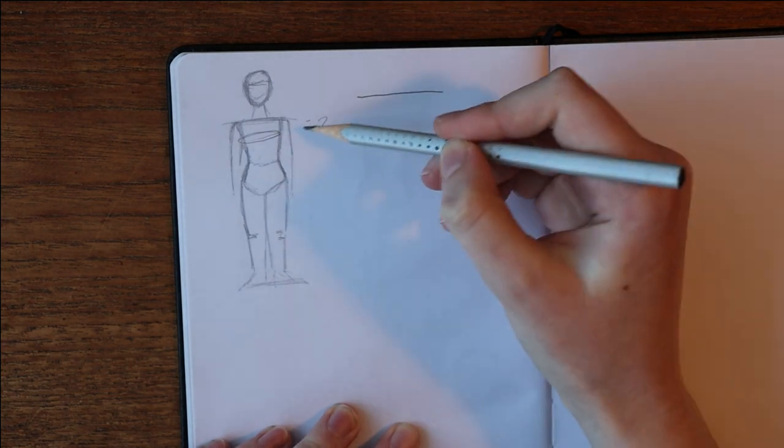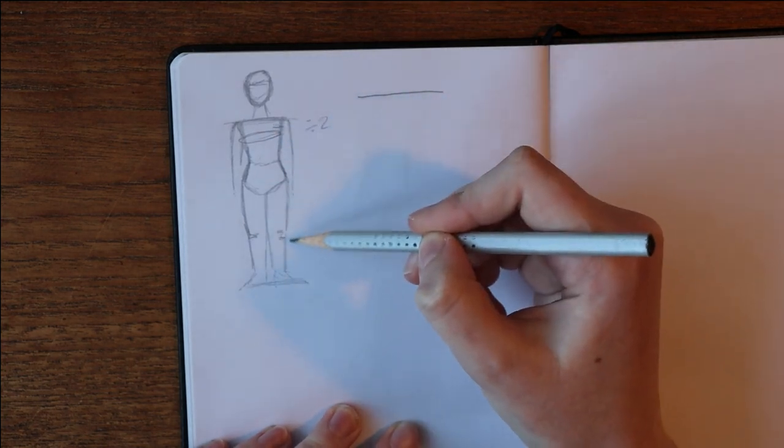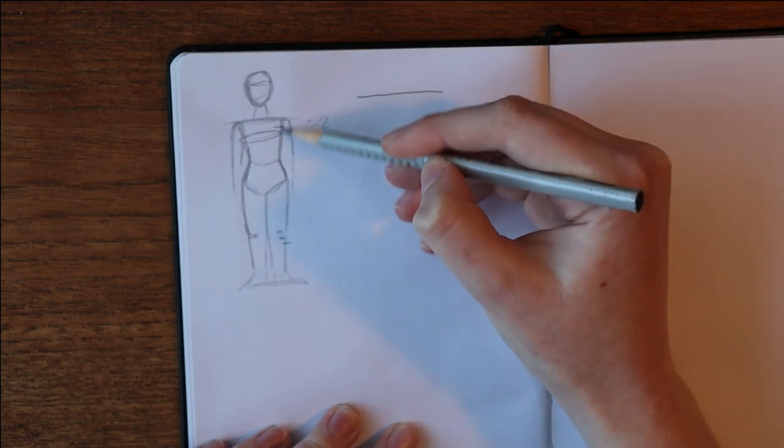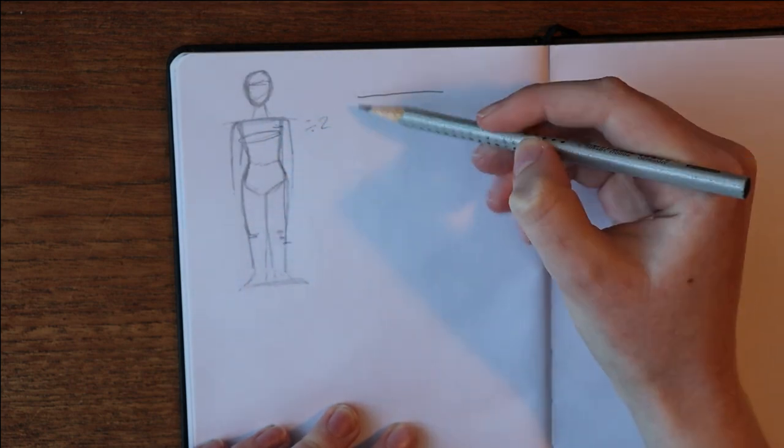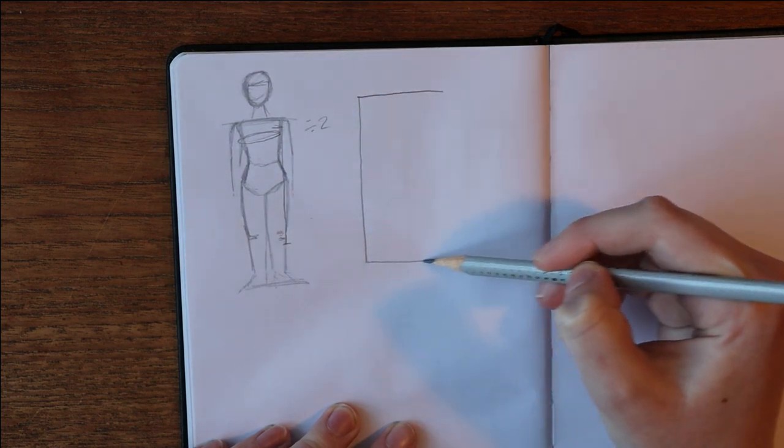Then you are going to take the measurement from where you want your dress to start to where you want it to end. And this measurement is going to become the length of your rectangular front and back pieces.